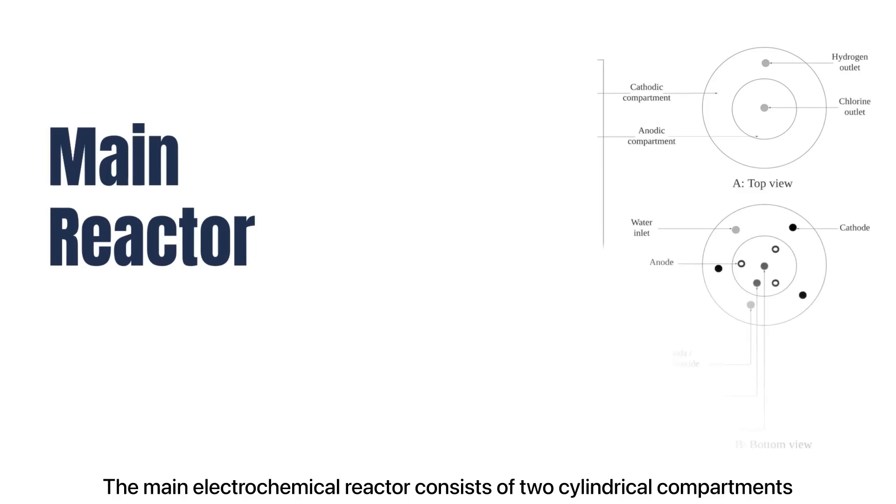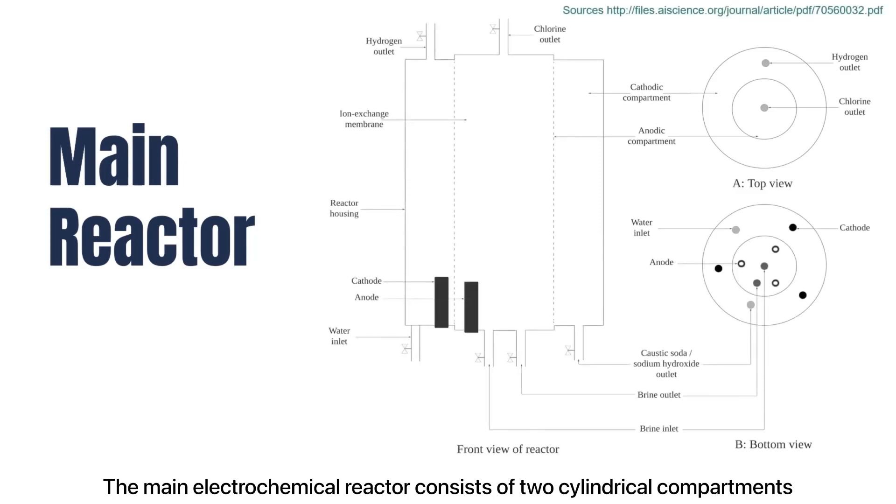The main electrochemical reactor consists of two cylinder compartments, where one cylinder is inside the other cylinder. The inside cylinder forms the anode side whereas the other cylinder forms the cathode side. The two cylindrical compartments are separated by an ion exchange Nafion membrane.